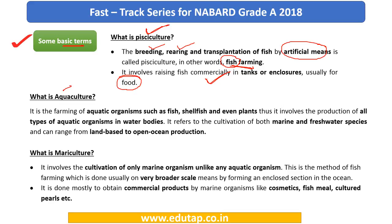Aquaculture — 'aqua' means water. The key difference from pisciculture is that pisciculture refers specifically to fish farming, whereas aquaculture covers the cultivation of all types of aquatic organisms — fish, shellfish, and even underwater plants. These water bodies can be either marine water or freshwater, ranging from land-based to open ocean production. So aquaculture is the broader term involving all aquatic organisms in both freshwater and marine environments.